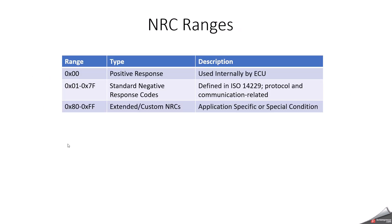What are the NRC ranges supported according to the UDS protocol? If it is 00, then it is a positive response — that is used internally by an electronic control unit. When the range is between 01 to 7F, those are standard negative response codes supported by UDS, mainly for protocol and communication-related errors. And 82 to FF is for custom NRC — as a developer, we can use it for application-specific or special conditions based on the requirement.